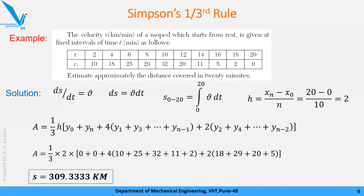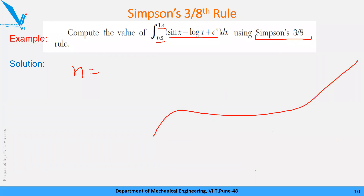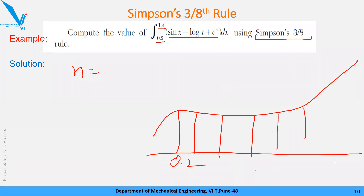Now we'll solve a numerical on Simpson's 3/8 rule. Integrate the function sin(x) - log(x) + e^x over the interval 0.2 to 1.4. The problem statement itself specifies using Simpson's 3/8 rule. First, we decide how many segments to create. Since we are implementing Simpson's 3/8 rule, n must be a multiple of 3. Options are 3, 6, 9, 12, 15, etc. For better accuracy, go for a larger n. When writing a program, we might use 120 or 150 strips, but as humans we choose a manageable number.